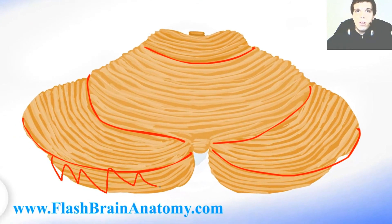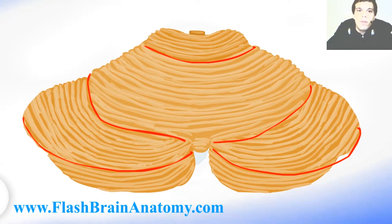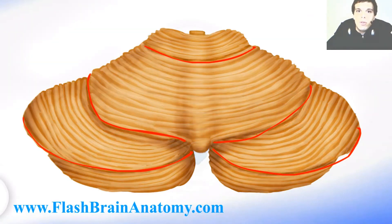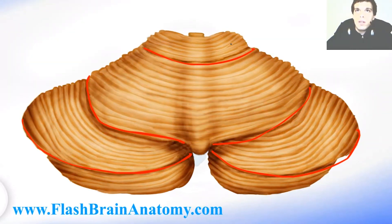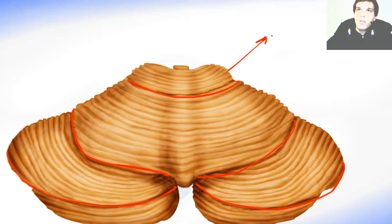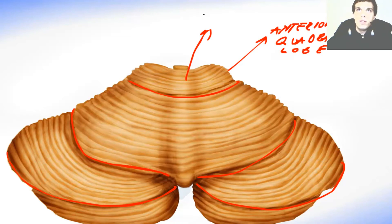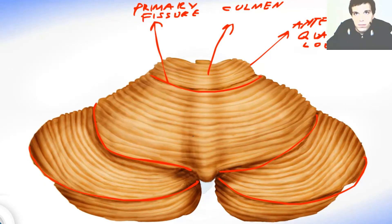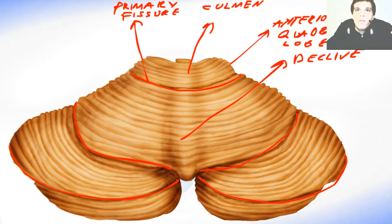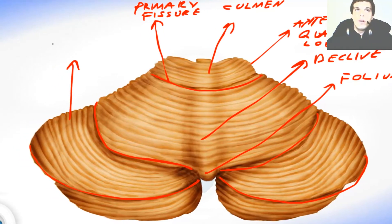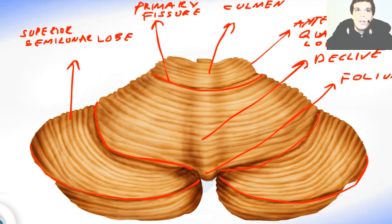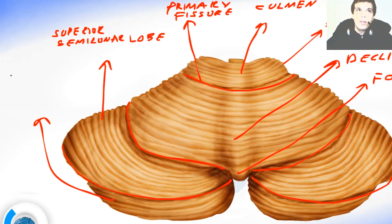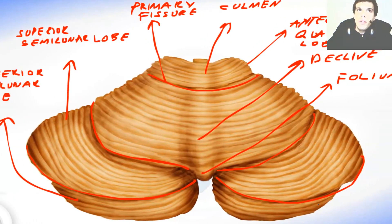This lobe over here is the inferior semilunar lobe. Now I've photoshopped this a little bit again — let's write this all down. This was the anterior part of the quadrangular lobe. This was the culmen. Then we had the primary fissure over here. Then comes the clivus and the folium somewhere over here. This was the superior semilunar lobe, and this was the inferior semilunar lobe. The fissure that divides the inferior and superior semilunar lobes is called the horizontal fissure.